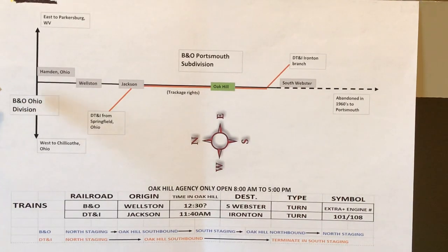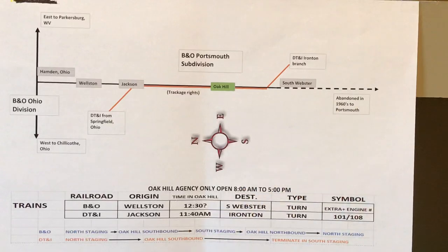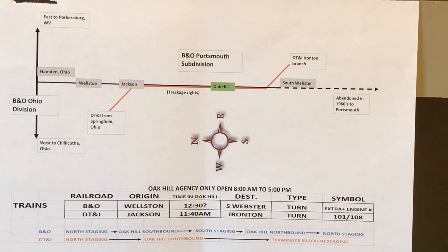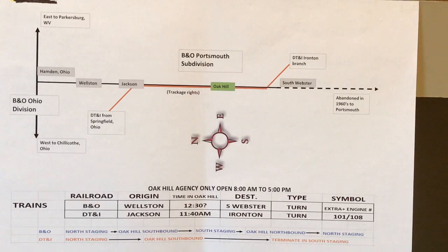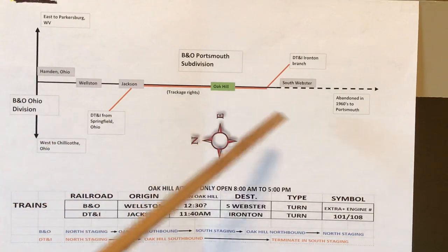The Portsmouth subdivision originally ran from Hampton, Ohio on the B&O Ohio division to Portsmouth, Ohio. Now in the 1960s, they abandoned the section south of South Webster. The C&O built a connection just north of their Lymeville bridge to connect to the old B&O track, so any industries they still served in the Portsmouth-Coyoteville area they could still serve. But there wasn't much traffic down there. So when I'm modeling in 1980, the line actually ended in South Webster.